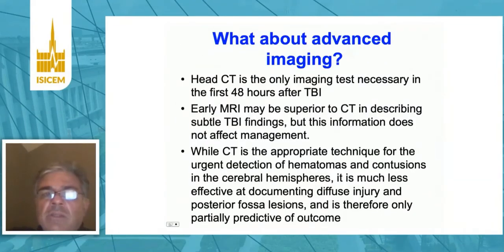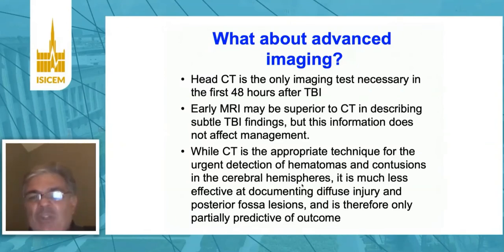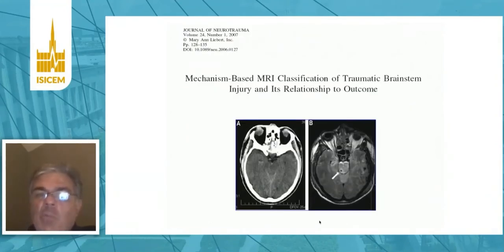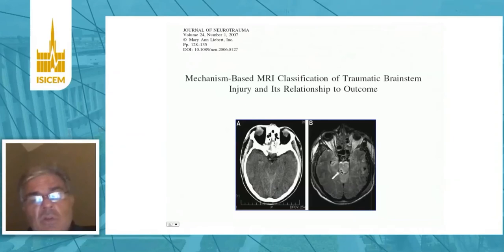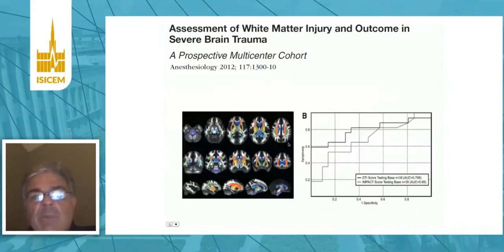What about advanced imaging? Head CT scanning is the only imaging you need in the first 48 hours of traumatic brain injury for decision making about care. Early MRI may be superior to describe subtle findings, but it doesn't necessarily affect management in the early phase. The CT is appropriate for urgent detection of space-occupying lesions, while more advanced imaging can help with later prognostication. Here's a CT that looks relatively normal, but on MRI there's a brainstem contusion. More sophisticated DTI imaging is generally used in patients who remain in coma several days after surgery to decide who should get ongoing care.